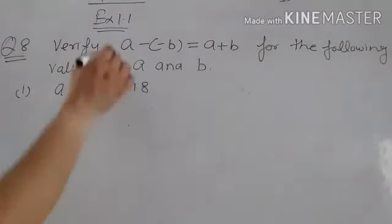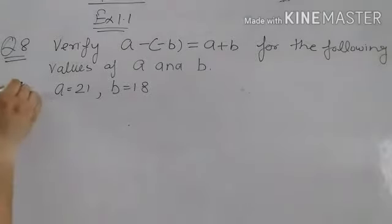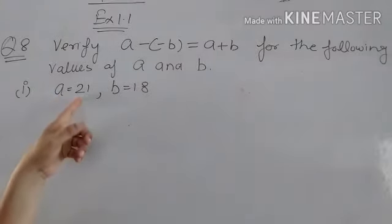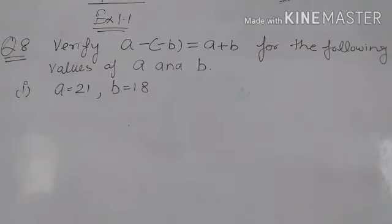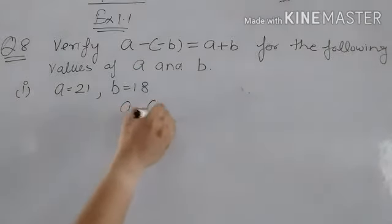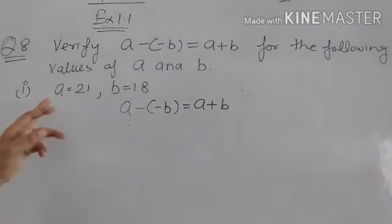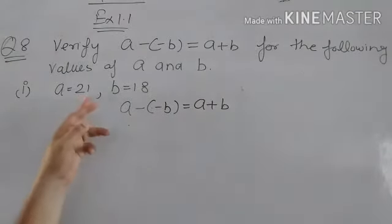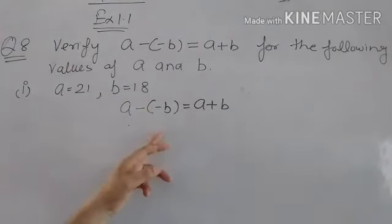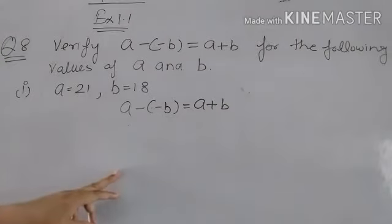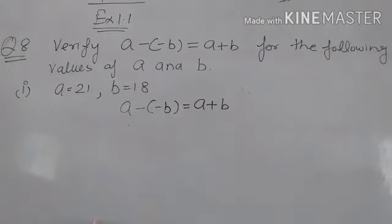This is our statement, and there are four parts in this question. In the first part, a equals 21 and b equals 18. We write the statement: a minus minus b equals a plus b. We put a equals 21 and b equals 18 in this expression, and the LHS and RHS values should be equal. We solve the LHS side and RHS side one by one.